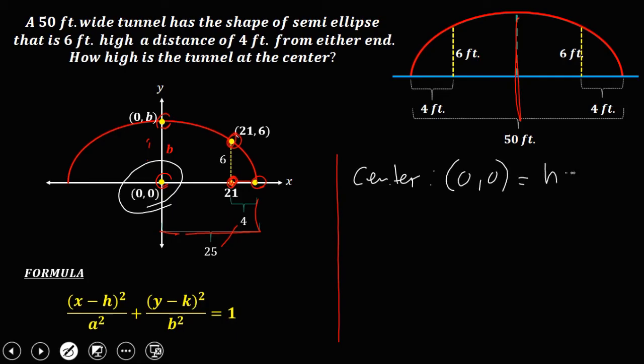So therefore, h equals 0, and k equals 0. Then for a, that's from center to the vertex, that's 25, so a is 25. Then for b, that's from the minor endpoints to the center, and that's unknown, so b is unknown.